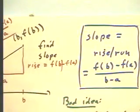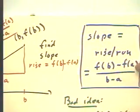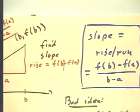That's summarized by simply saying slope is rise over run is F of B minus F of A over B minus A. And that was the answer to the question.